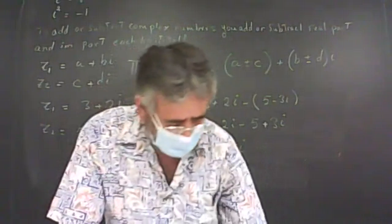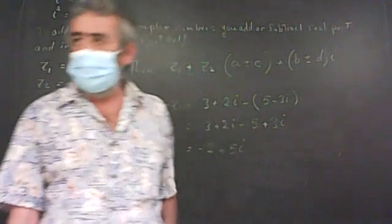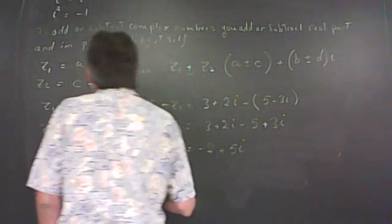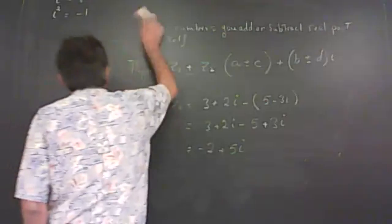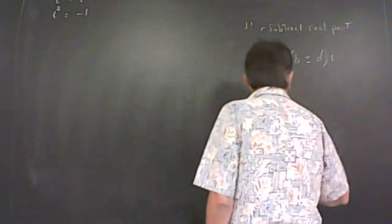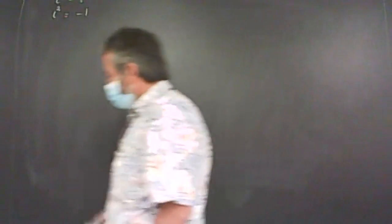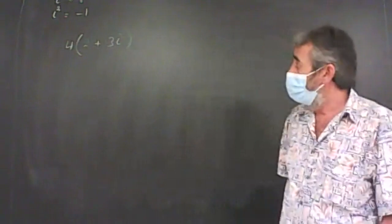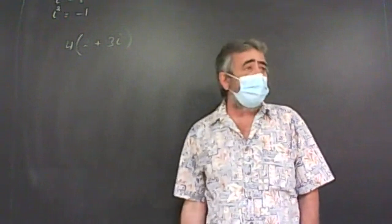Addition and subtraction are easy — basically just like regular algebra. As for multiplication, let's say for instance I'm multiplying 4 times 2 plus 3i. This is the same as expanding when we have x — just multiply the numbers. So 4 times 2 is 8 and 4 times 3i is 12i. That's it.